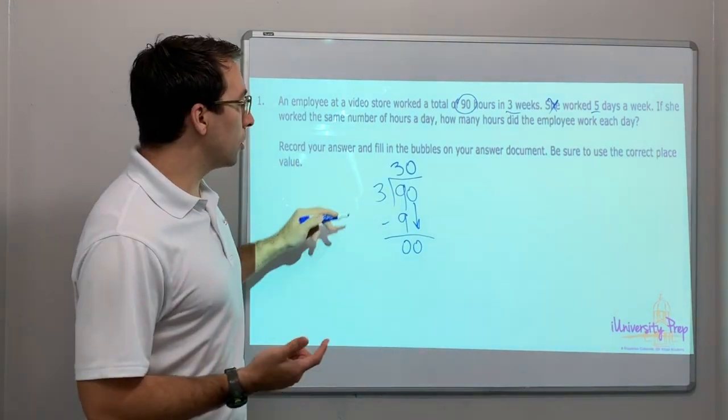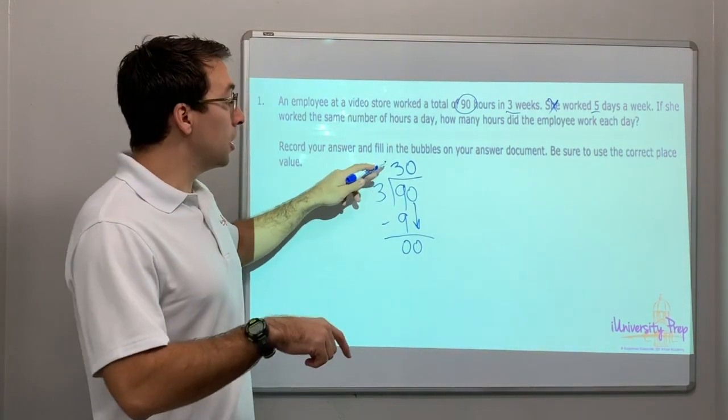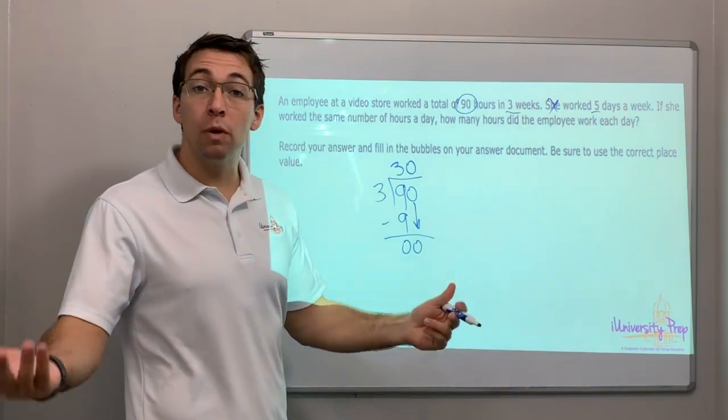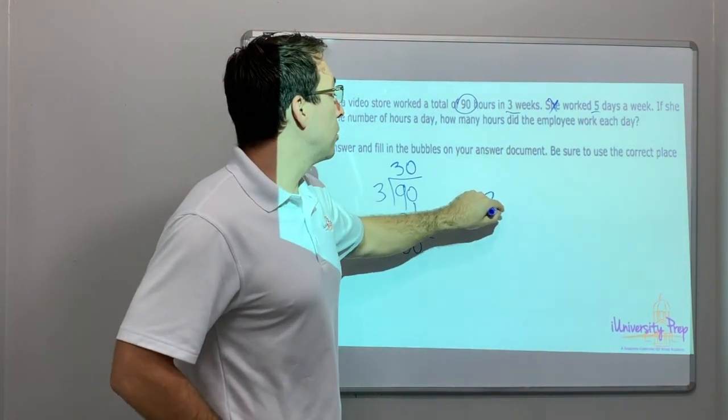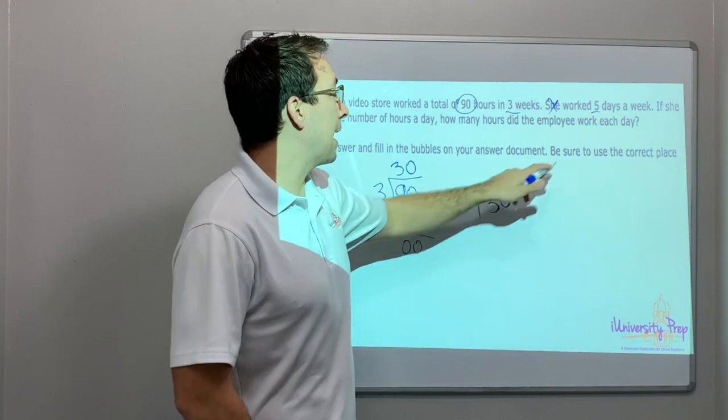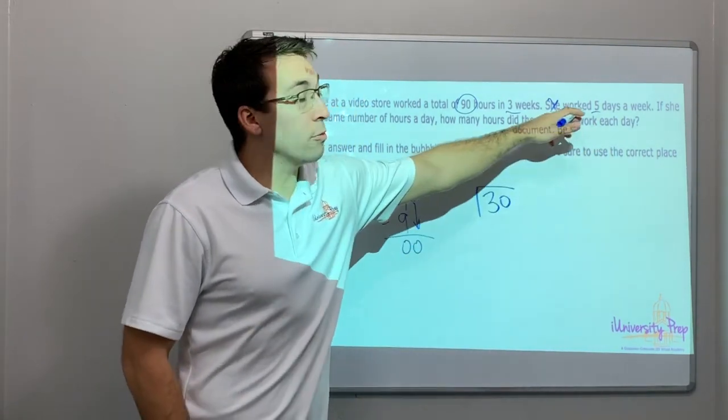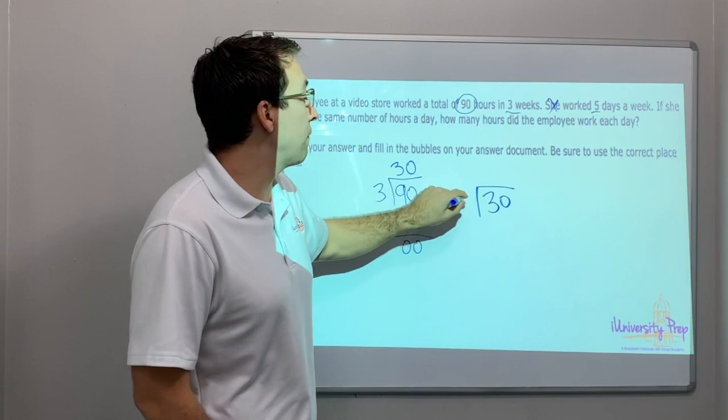Great. So look, per week, because this is three weeks, she works 30 hours each week. Now we could do 30 divided by how many, because there's 30 hours in a week, how many days does she work each week? Five.